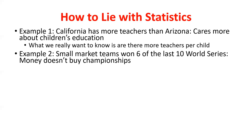Another example: 'Small market teams have won 6 of the last 10 World Series.' Small market teams have less revenue and can't afford as much high-quality talent, so this seems to go against conventional wisdom. But why only look at the last 10 years? If you went back to year 11 and a large market team won, now it's 6 out of 11 — not as impressive. Maybe over 20 years it's only 6 out of 20. Anytime data is censored to a specific time window, ask why.